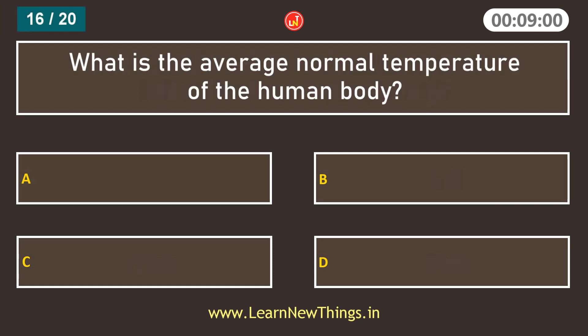What is the average normal temperature of the human body? 98.6 degrees Fahrenheit.